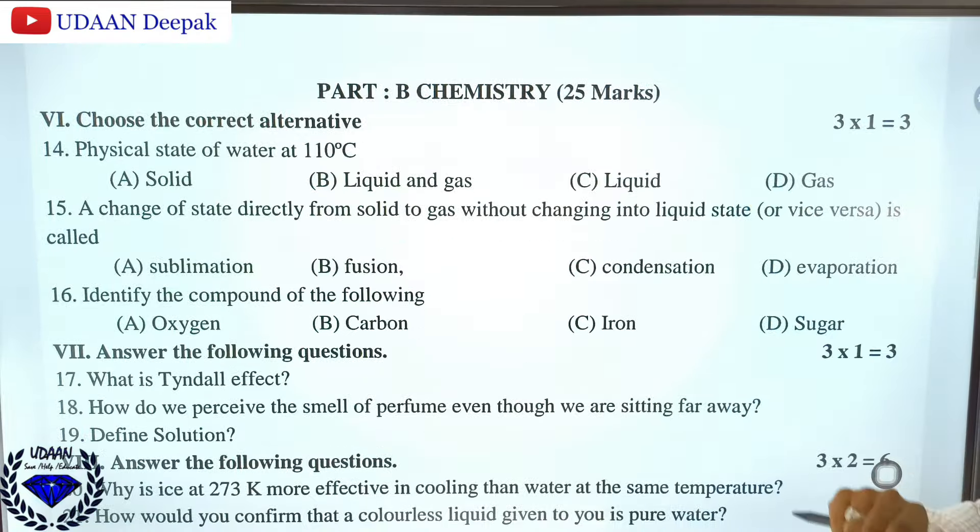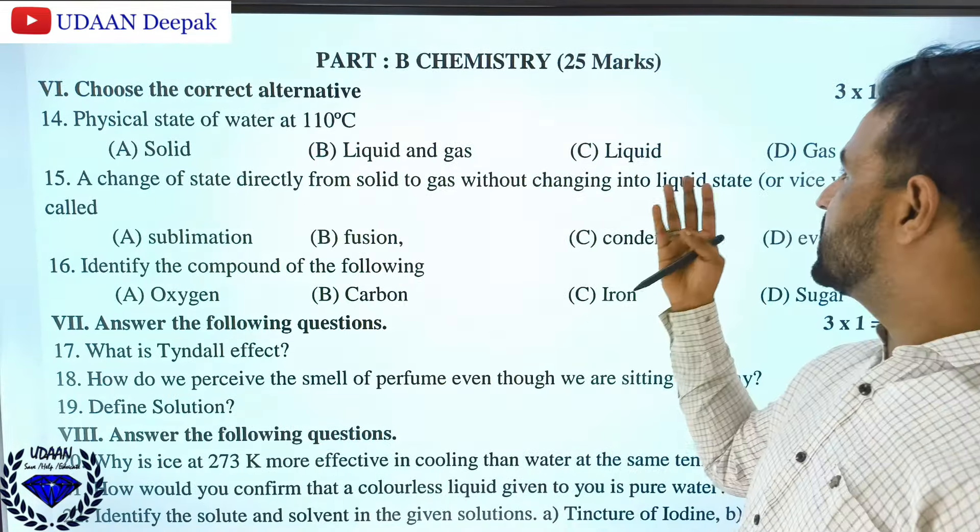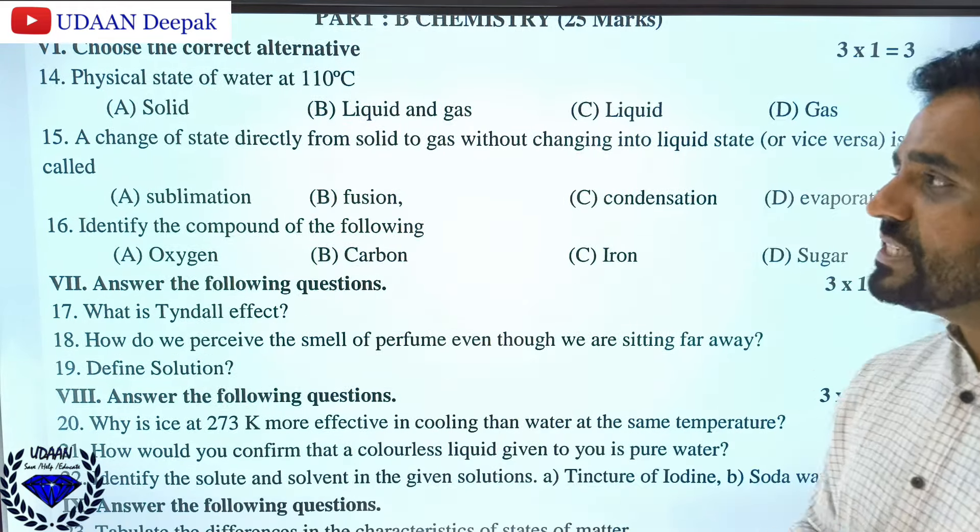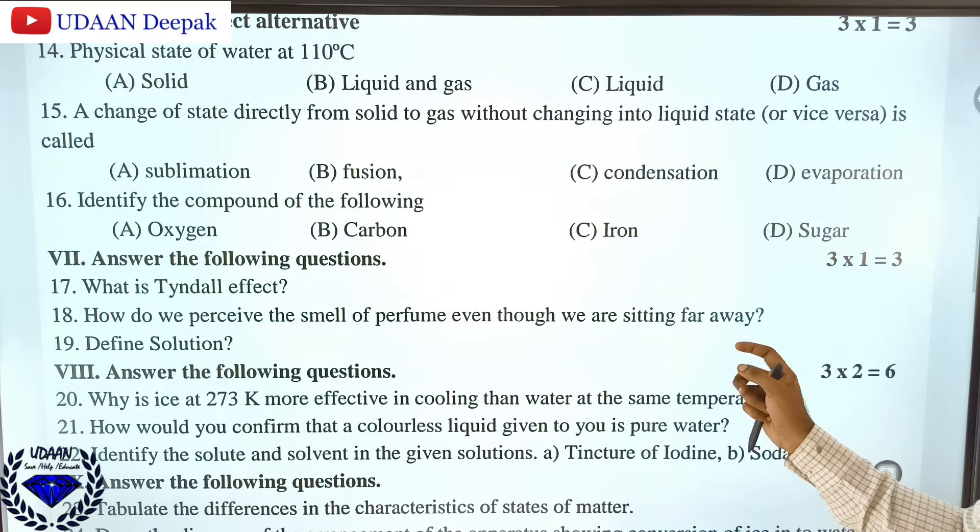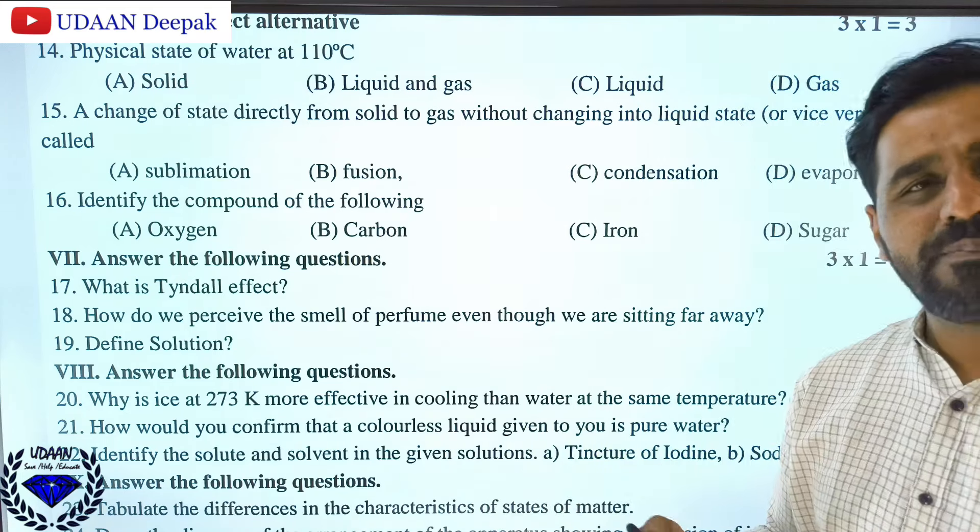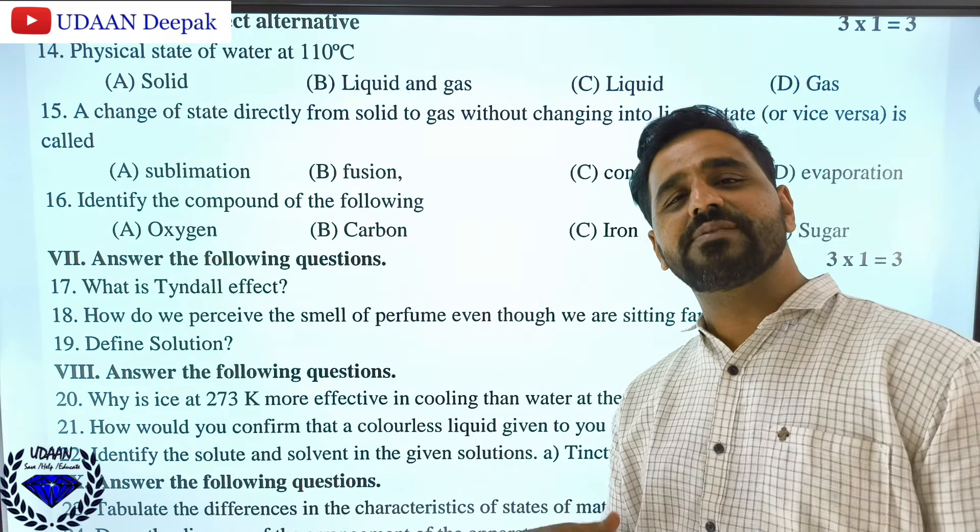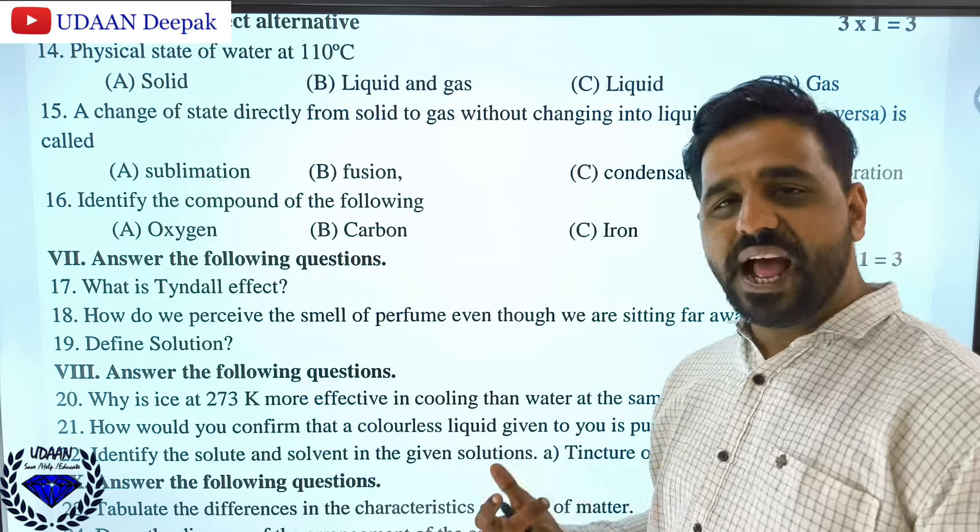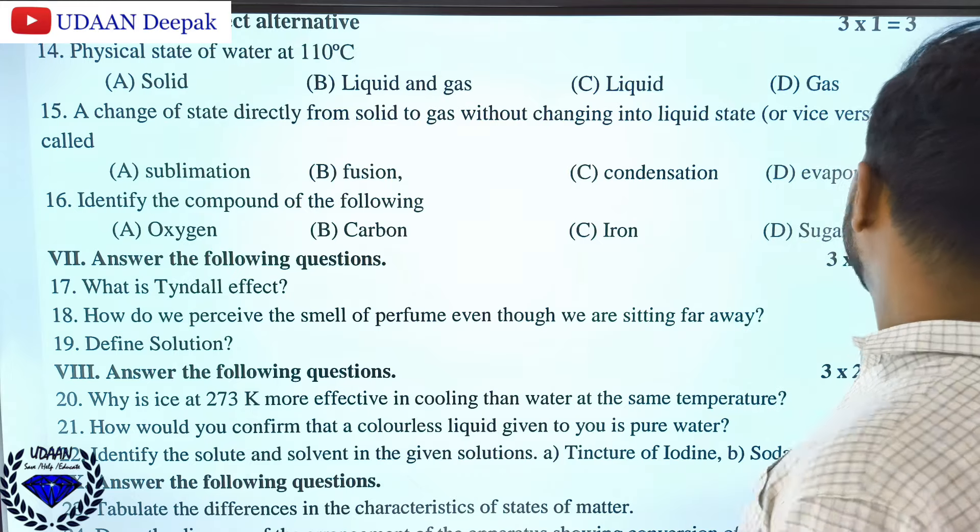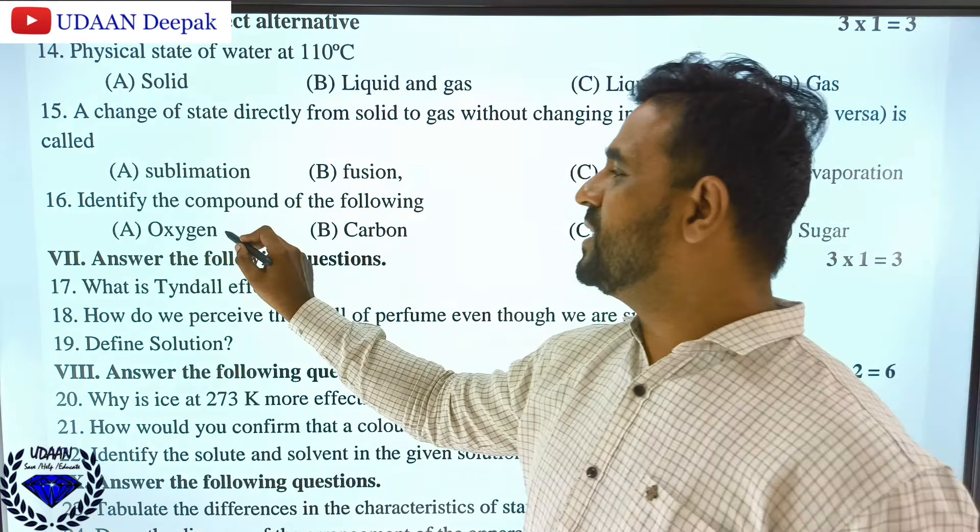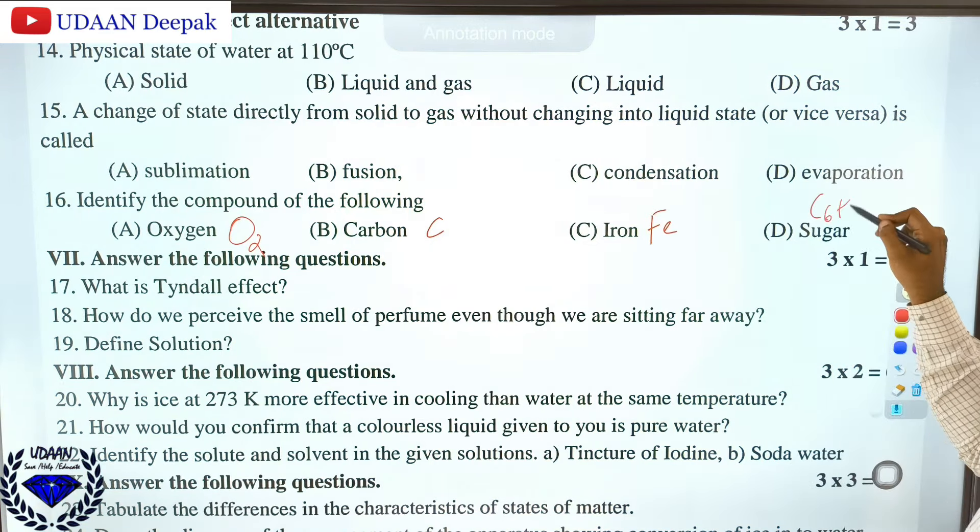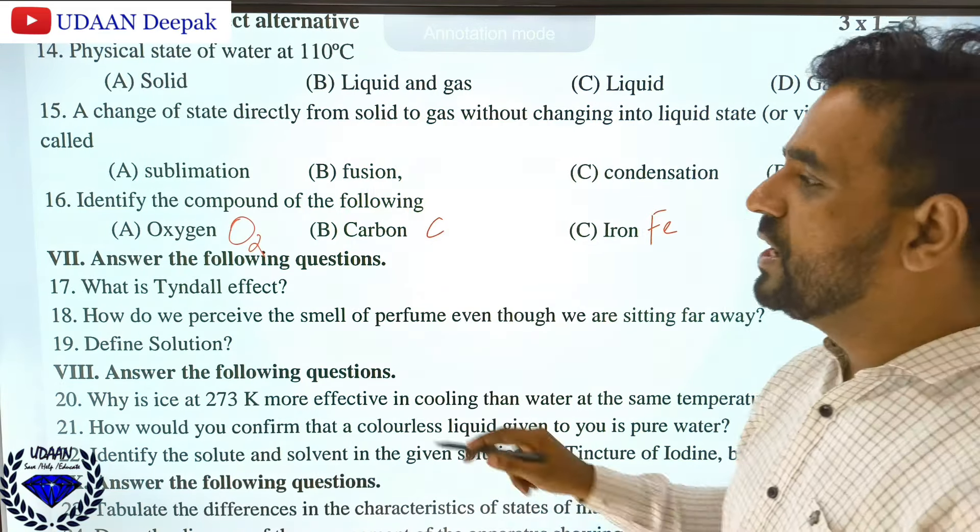Coming to the chemistry part. Physical state of water at 110 degrees Celsius is gas, because above 100 degrees it is gaseous state. A change of state directly from solid to gas without changing into liquid is sublimation, camphor is an example. Sugar is a compound because it has the formula C6H12O6, while oxygen, carbon, and iron are elements.